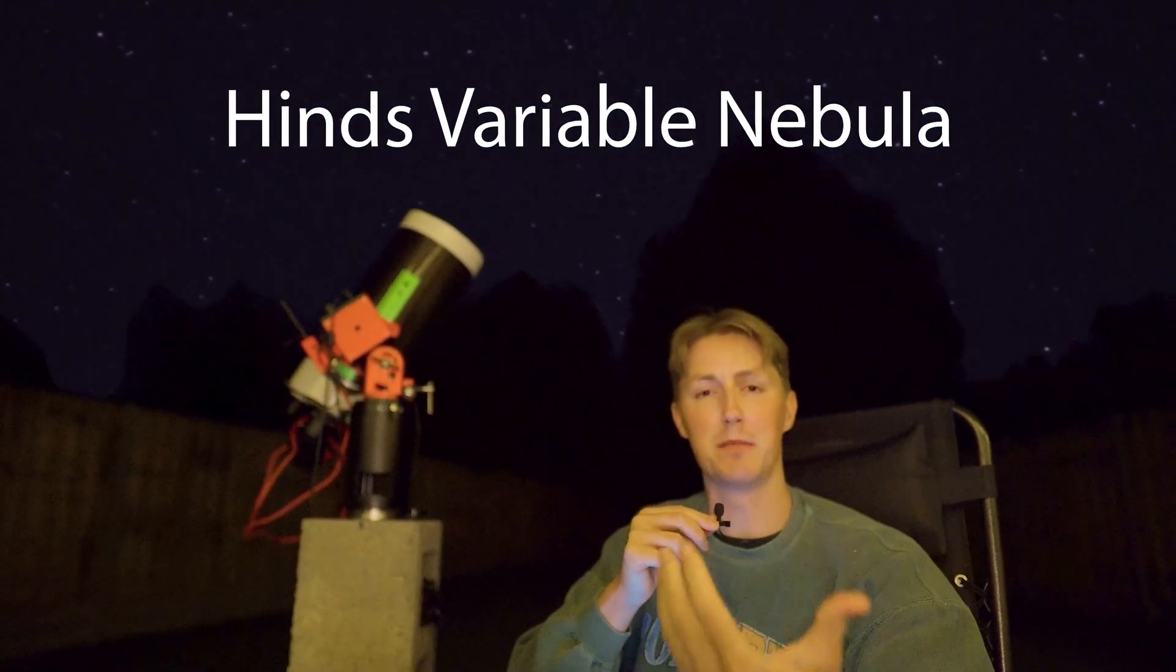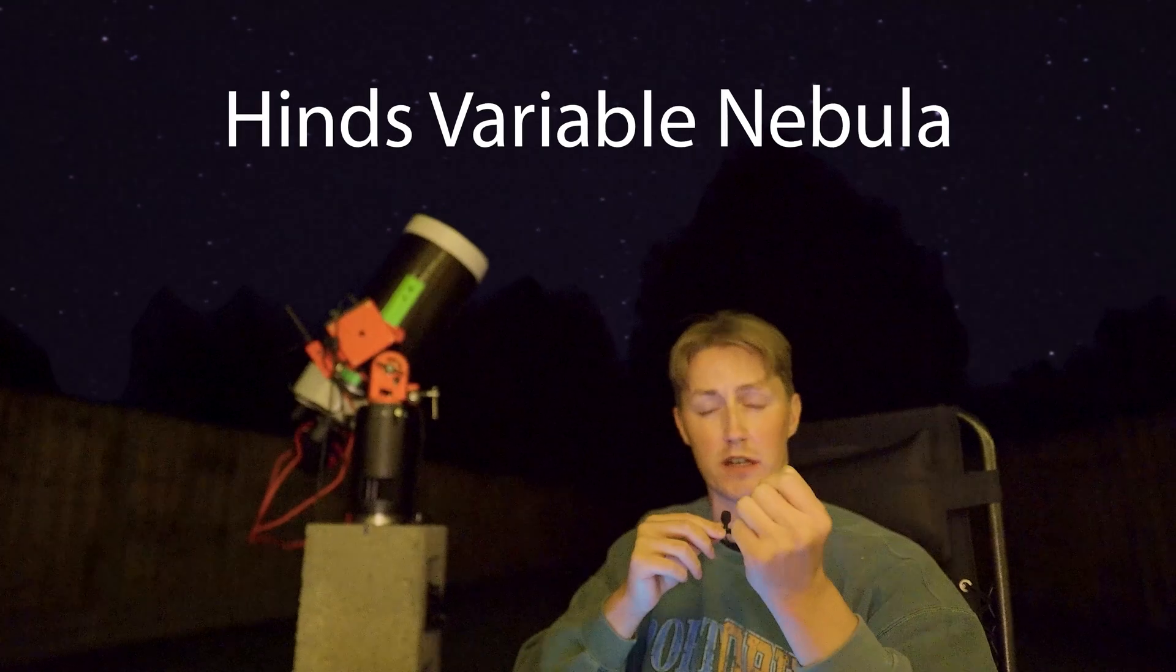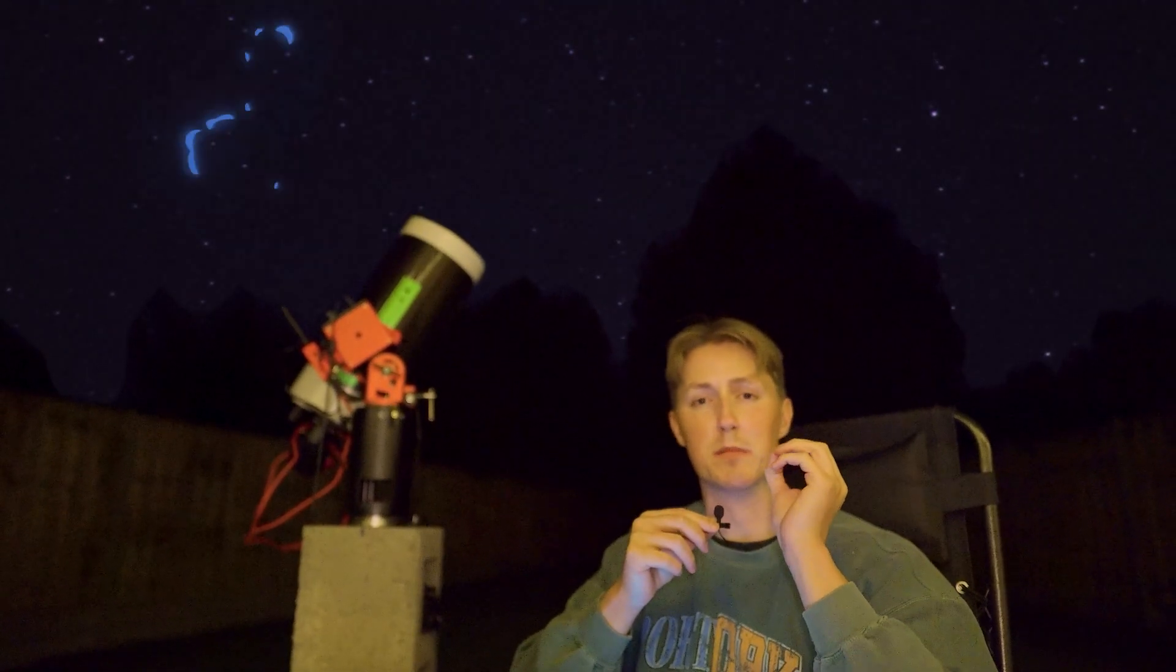Continuing with our theme of the episode, which is pursuing the monsters of our universe, we're now going after something even more fearsome. This is Hinds Variable Nebula. The name itself refers to the variable star at the core of this nebula, but what is the most shocking part is once again the shape and appearance of this nebula, because it seems to resemble the devil in disguise.